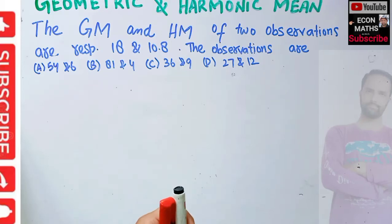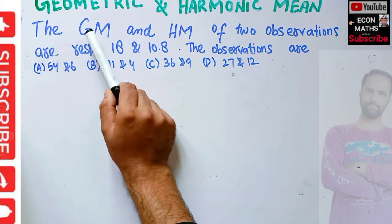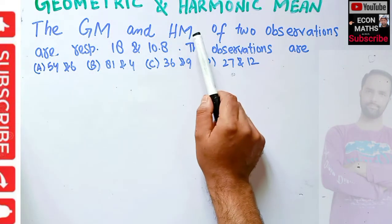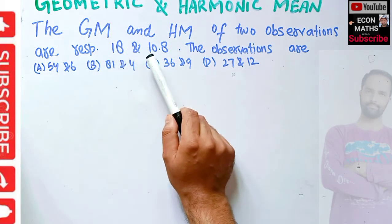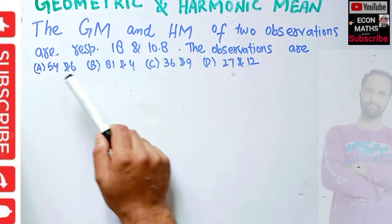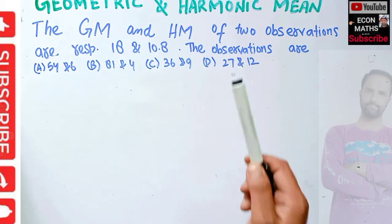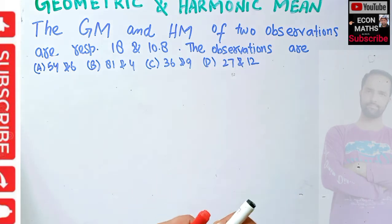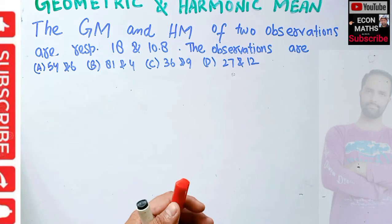In this video we will solve a problem on geometric and harmonic mean. The question is: the geometric mean and harmonic mean of two observations are respectively 18 and 10.8. The observations are (a) 54 and 6, (b) 81 and 4, (c) 36 and 9, or (d) 27 and 12. We need to find the two observations.